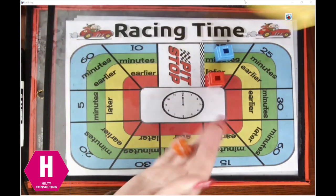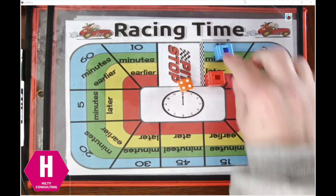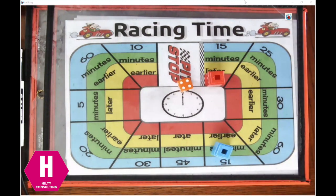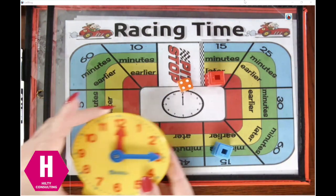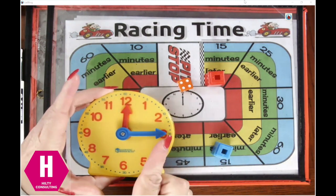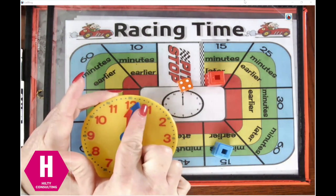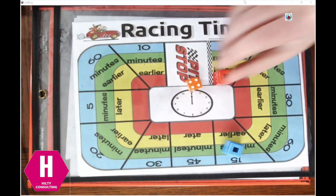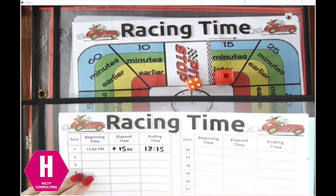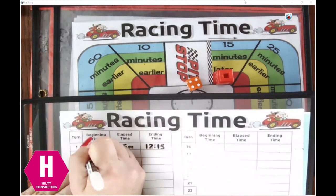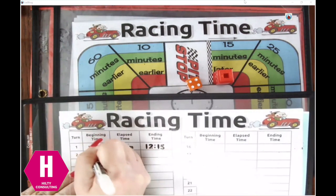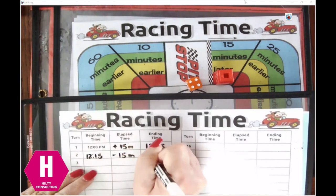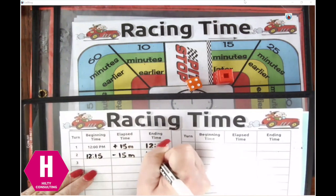I'm going to roll this time. I roll a four, so mine now says 15 minutes earlier. If I have to make my clock 15 minutes earlier, I have to go backwards 15 minutes, and now I am at 12 o'clock. On my recording sheet, my starting time for that was 12:15, I had to subtract 15 minutes, and my ending time right now is 12 o'clock.